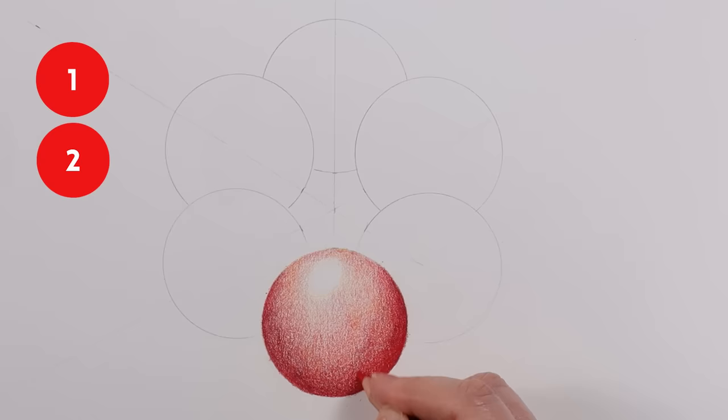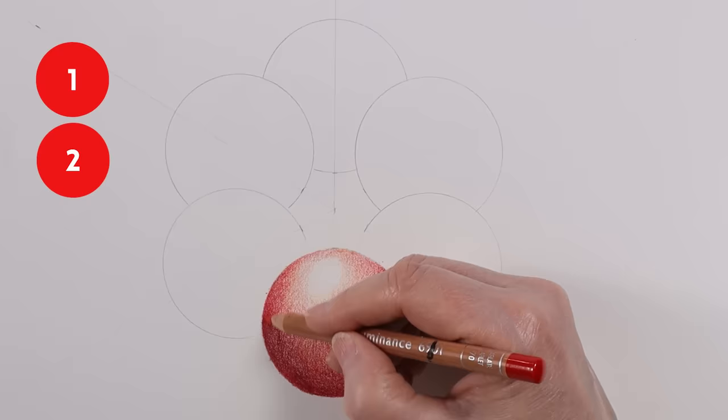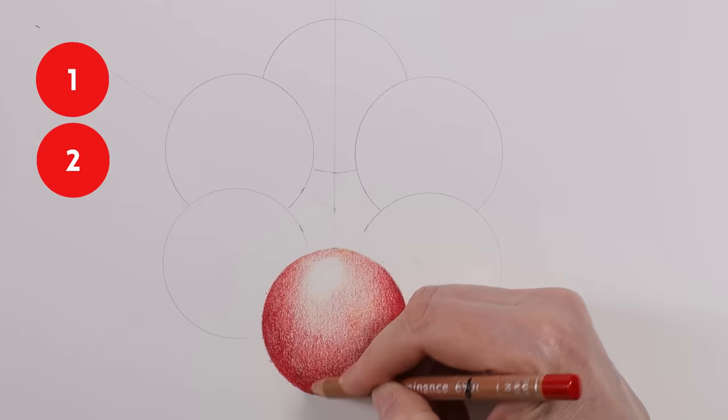I switched back over to the dark red and I'm just continuing to build layers. You'll notice that I'm working particularly along the edge away from the highlight and I'm working between a pressure of about a one and a two. Lots of layering is going on and my final color that I'm going to be adding is going to be the yellow. And again I'm adding the yellow in because this is a warm red that I want to create. So I'm layering on the yellow on top of that just to create a little bit more warmth with the reds.